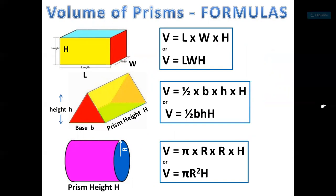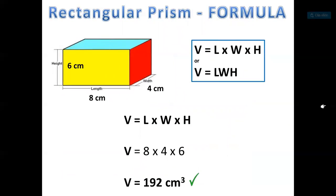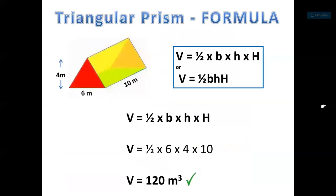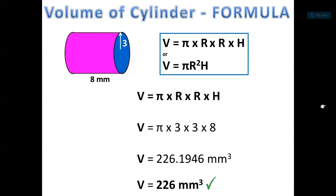Summary of formulas for different prisms. For a rectangular prism: V = LWh — just multiply everything, for example 8 times 4 times 6. For a triangular prism: V = one-half × b × h (area of triangle) times the height of the prism. For a cylinder: V = πr²h.